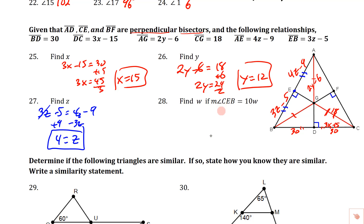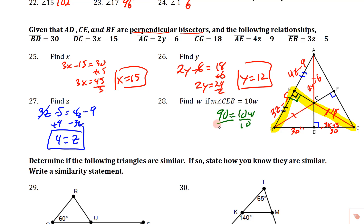Find the measure of angle CEB if it equals 10W. That angle is at the perpendicular bisector intersection — it's a right angle, so 90 = 10W. Dividing by 10 gives W = 9.